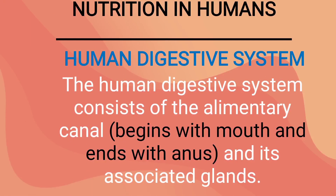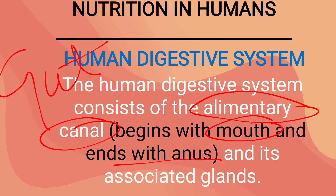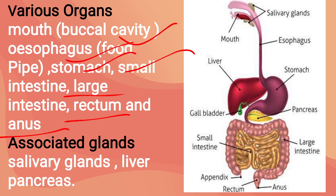Nutrition in humans. To study this topic we have to study the human digestive system. The human digestive system consists of an alimentary canal, also known as the gut, which starts with the mouth and ends at the anus, along with associated glands. The various organs in the alimentary canal are: mouth, esophagus, stomach, small intestine, large intestine, rectum and anus. The associated glands are salivary glands, liver and pancreas. You can see all the parts in this picture.